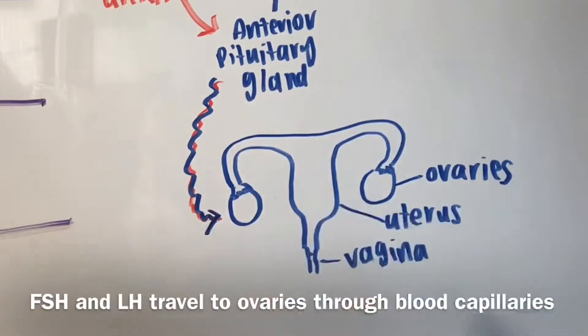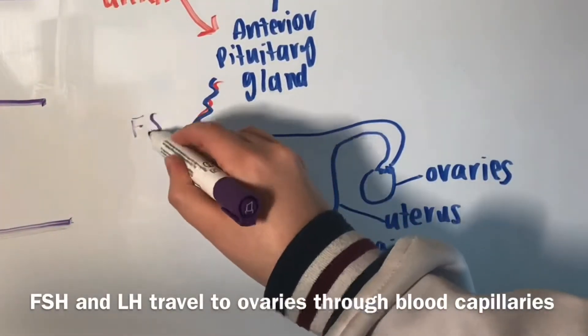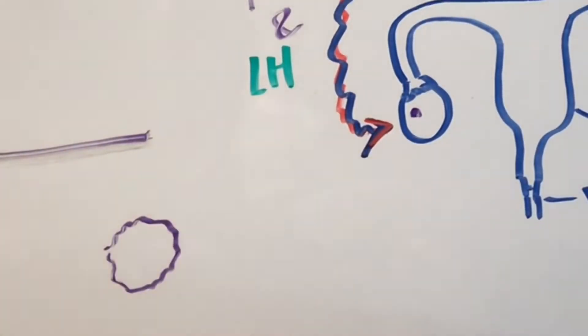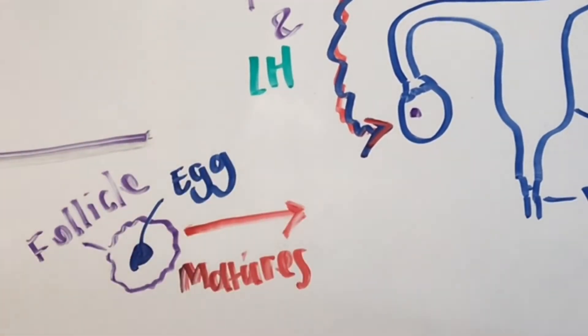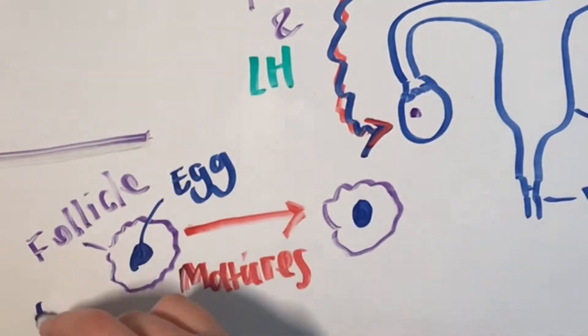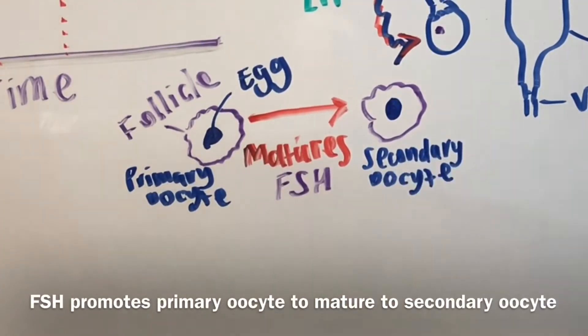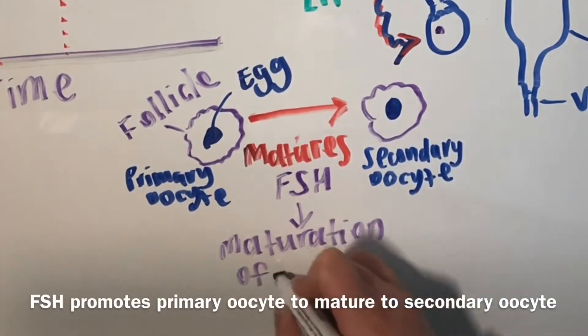These two hormones will travel via the blood in the capillaries to the ovaries. FSH will act on a follicle containing an egg. This hormone will promote the maturing and growth of one primary oocyte promoting meiosis 1 until metaphase 2. This produces a secondary oocyte.